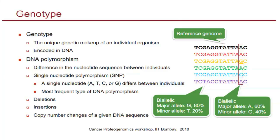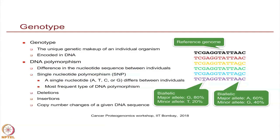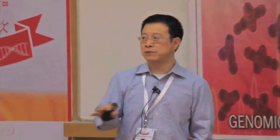There is another biallelic locus here where two individuals have G while all the others have A. This is also a biallelic position with the major allele at 60 percent and the minor allele at 40 percent. This is a very simple type of DNA polymorphism, and because the difference only occurs in a single nucleotide, it is called single nucleotide polymorphism or SNP. This is a very common type of DNA polymorphism in the genome — for example, in the human genome there are around 10 million SNPs.